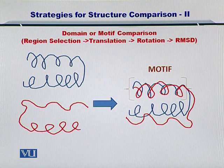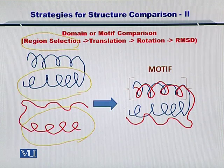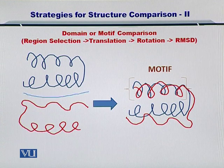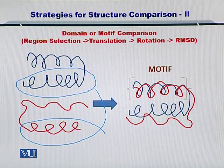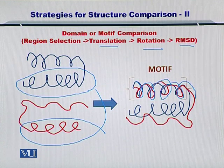Just one extra step is needed here — you have to select a region first. In this case, the blue protein and the red protein have an alpha helix that is common, while the other alpha helix as shown here is replaced by a loop. So all we are interested in is to compare this common region. Towards this, you identify the region, followed by the same steps of translation and rotation. Then you have the motif — the alpha helix — very nicely lined up, and this can be followed by computing the RMSD.